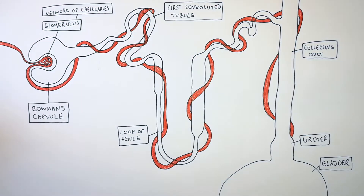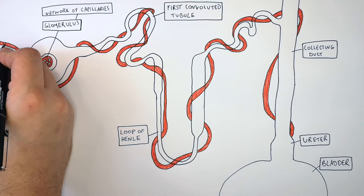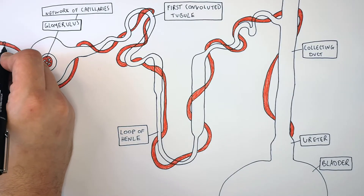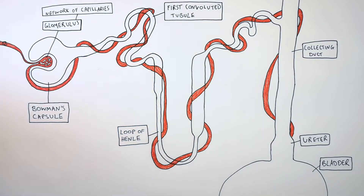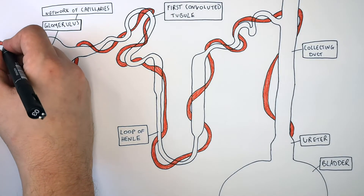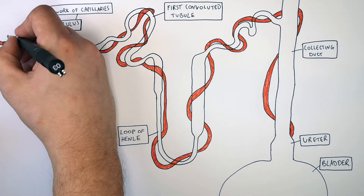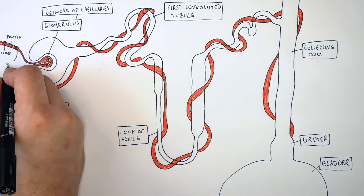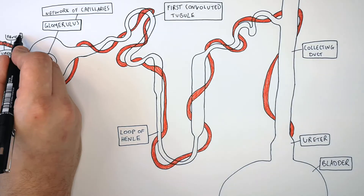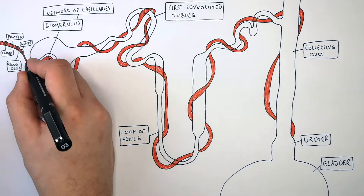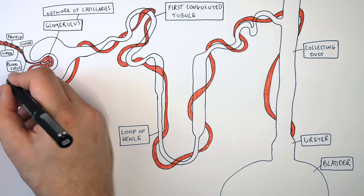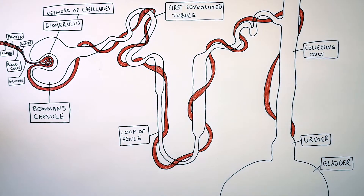The function of the nephron and the kidneys is to filter out and then reabsorb useful nutrients. In the blood you find urea, proteins, red blood cells, water, and glucose. The molecules we're going to be talking about today are urea, protein, water, blood cells, and glucose.